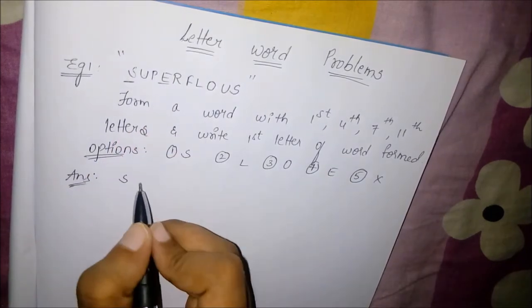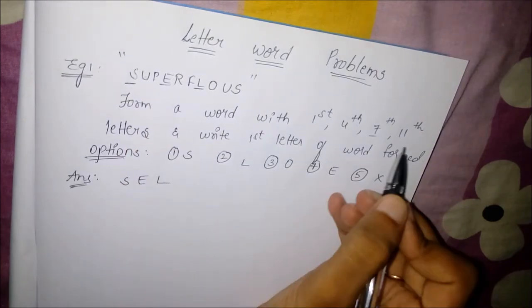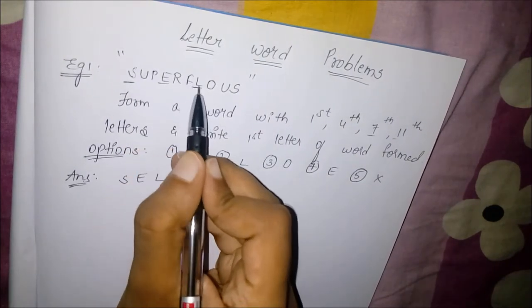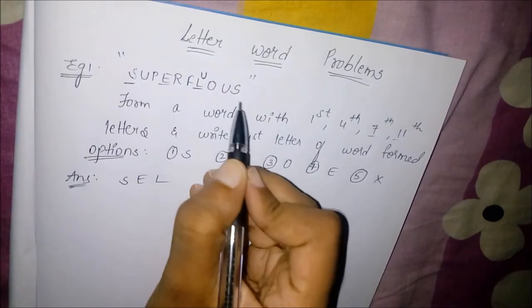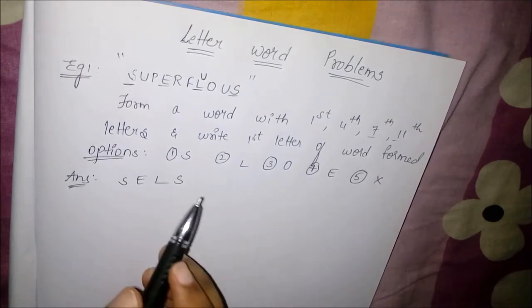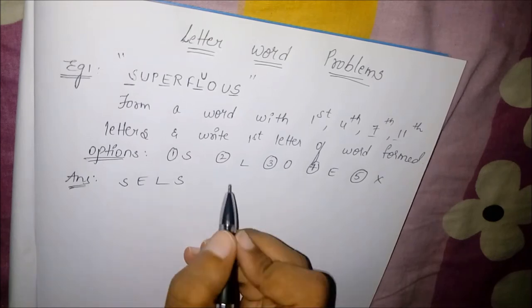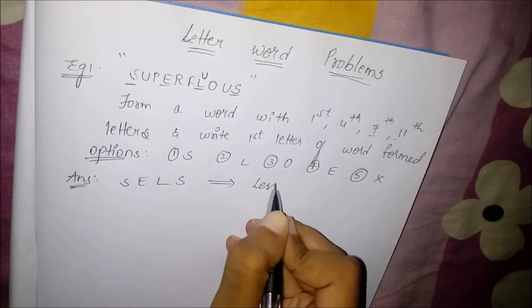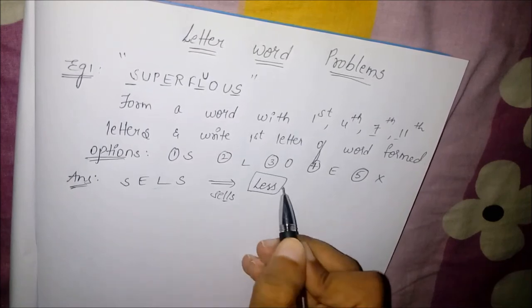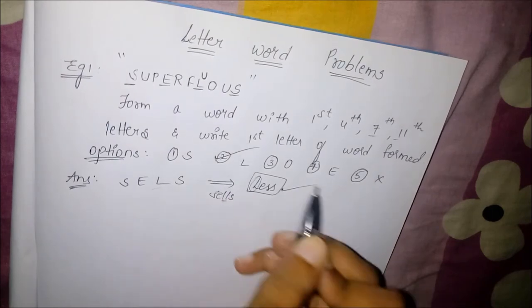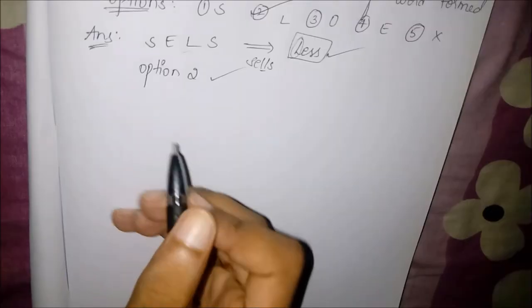In the given question: the first letter is S, the fourth letter is E, the seventh letter is L, and the eleventh letter is S. So we got S, E, L, S. Now arranging them in a particular order to form a word, the word we get is 'less', and the first letter of that formed word is L. So option two is the right answer.